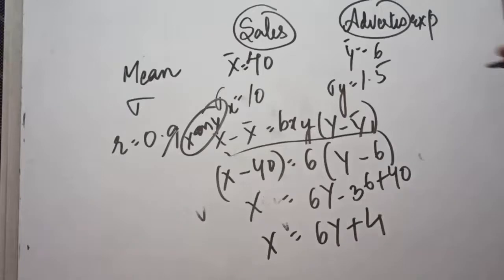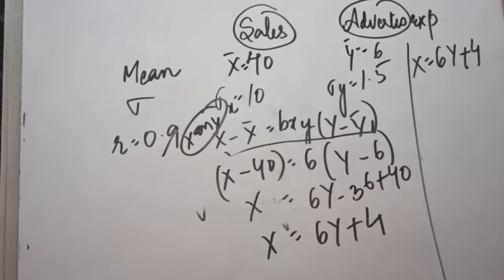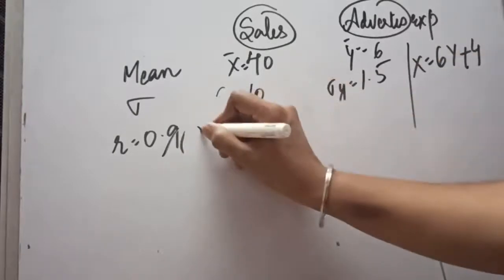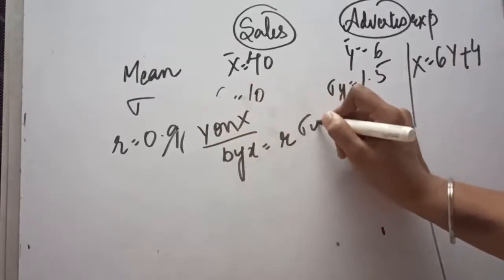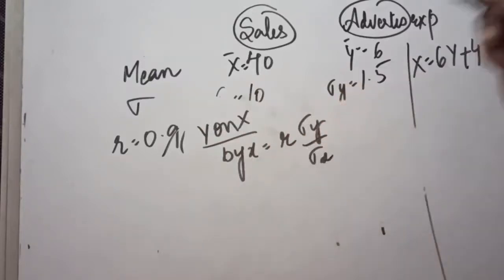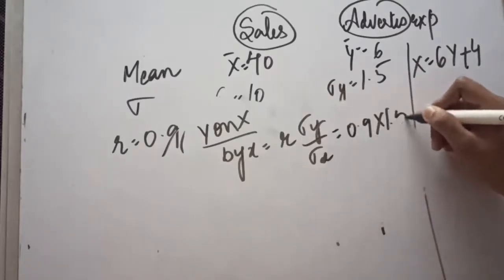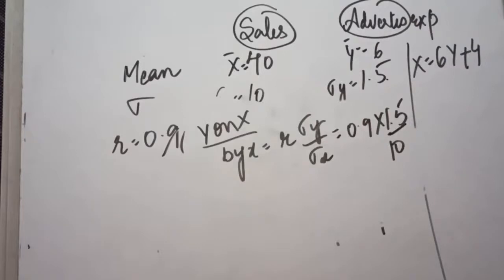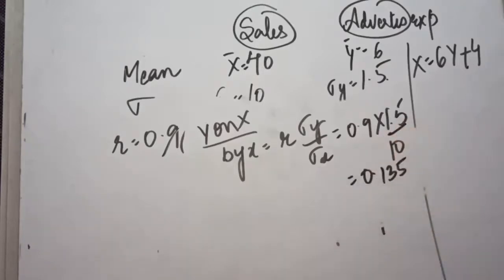Noting down the first answer: x = 6y + 4. Now, in the same question, if we have to calculate the y on x equation, the procedure is the same. For y on x, we need byx, and the formula is r × (SD_y / SD_x). Here, r is 0.9, standard deviation of y is 1.5, and standard deviation of x is 10.